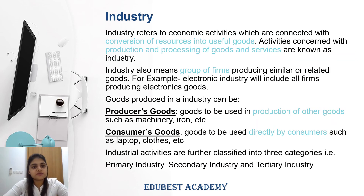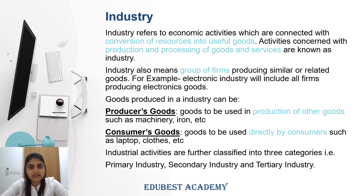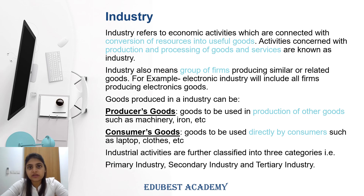We will start with the first part of business, that is industry. Industry is related to all the economic activities which deal with production and processing of goods and services. In easy terms, all economic activities which convert resources into useful goods fall into industry. Also, a group of firms working with similar nature or producing related goods are also accumulated into industry.